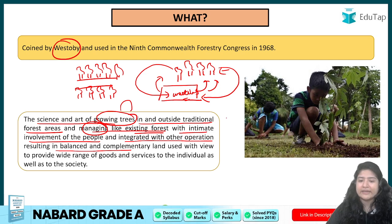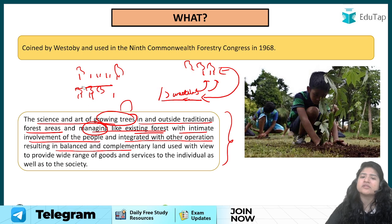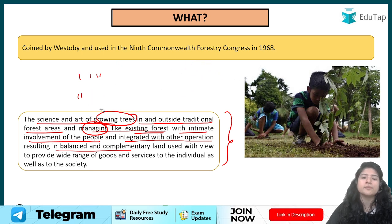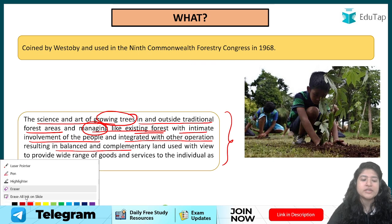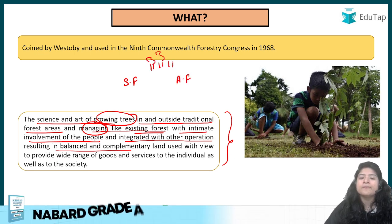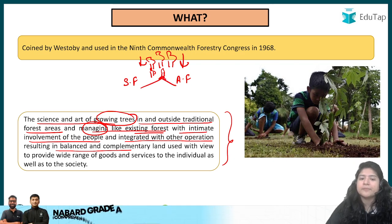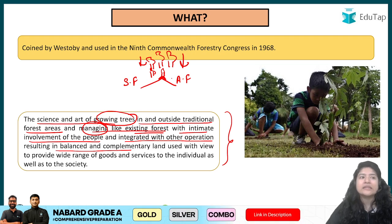So social forestry is the science and art of growing trees in and outside traditional forest areas, managing them like the existing forest, with the intimate involvement of the people and integrated with other operations. Now, some of you might think agroforestry is the same thing — in agroforestry also we were planting trees outside the forest system to reduce dependency. That is true. The similarity between social forestry and agroforestry is this only: both reduce the pressure on the natural forest.